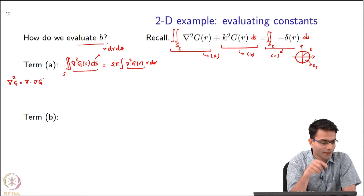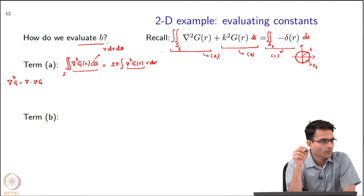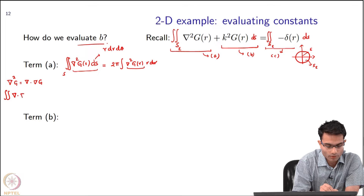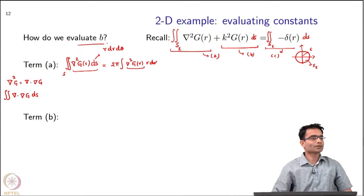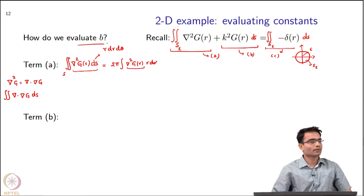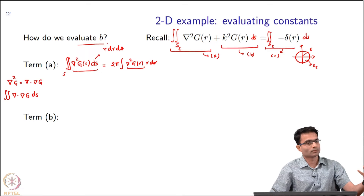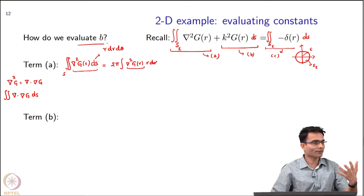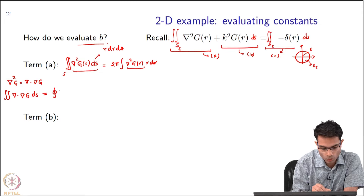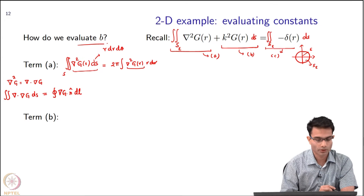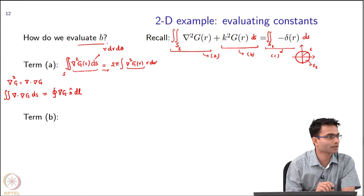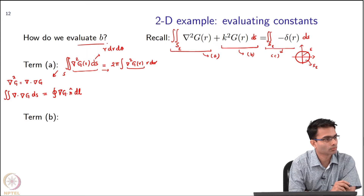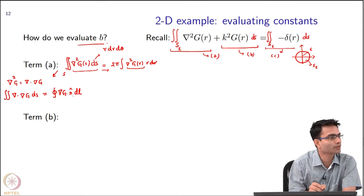So when I compute the integral of del dot grad g dS, the divergence theorem comes to mind. The divergence theorem converts this into the outward flux. This becomes the outward flux of del g dot n_hat times dL. This route seems more intuitive because it reduces the dimension of the integral straightaway. n_hat here is always pointing radially outward, so n_hat equals r_hat.